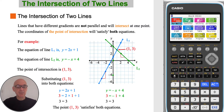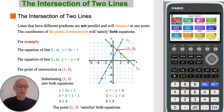In the example shown, the equation of line L1, the blue line, is y equals 2x plus 1, and the equation of line L2, the green line, is y equals negative x plus 4. As can be seen in the diagram, the point of intersection of these two lines is the point 1 comma 3.